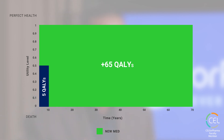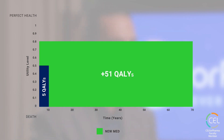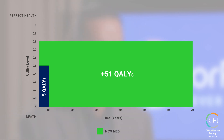Even if that life is not perfect — say 70 years at a quality of 0.8 — we still have a lot of QALYs: 70 times 0.8, which is 56.